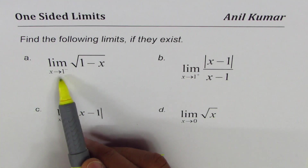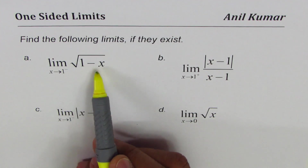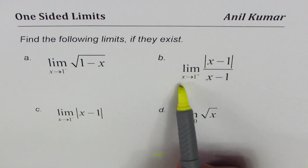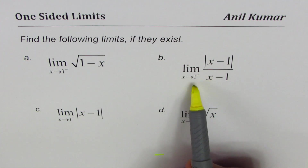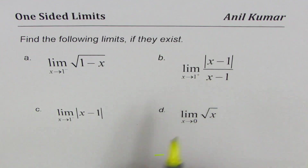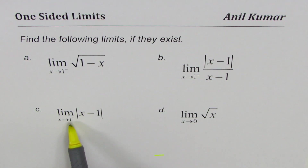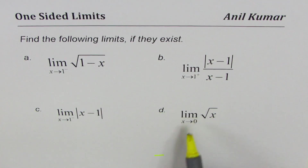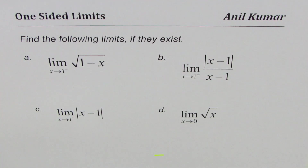The question is: find the following limits if they exist. Limit as x approaches 1 from the left side for square root of (1 minus x). Limit as x approaches 1 from the right side — that plus indicates right side — for the function |x minus 1| divided by (x minus 1). Limit as x approaches 1 from the left side for |x minus 1|. And limit for square root of x at 0.